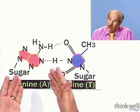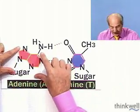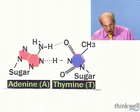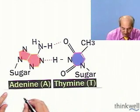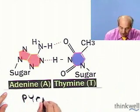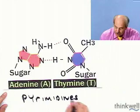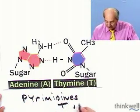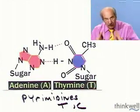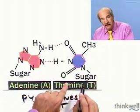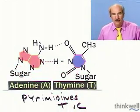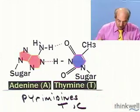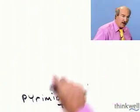Adenine always bonds to the pyrimidine thymine. We also have pyrimidines — the pyrimidines are thymine and cytosine. Remember that adenine always bonds to thymine, so here's a purine-pyrimidine bond. They bond through hydrogen bonds.